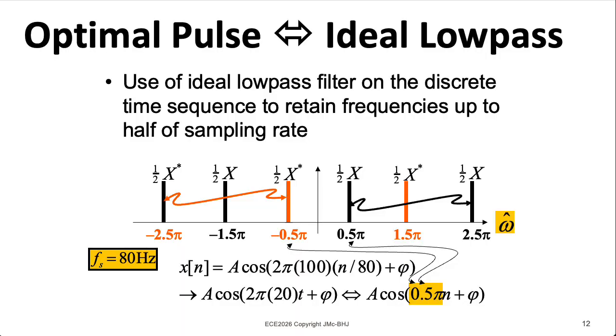In ECE 3084 we show that that sinc interpolation procedure corresponds to applying an ideal perfect brick wall low-pass filter in the omega continuous time domain. So it's as if we magically killed off all of these aliases that were in the omega hat domain.